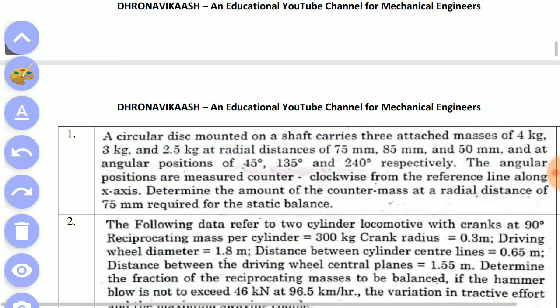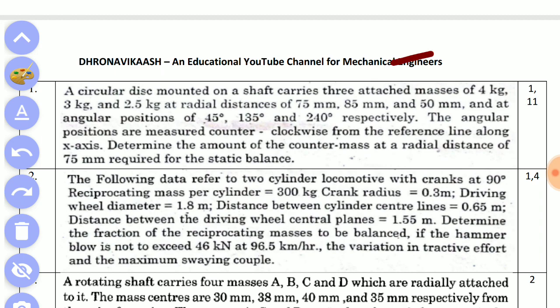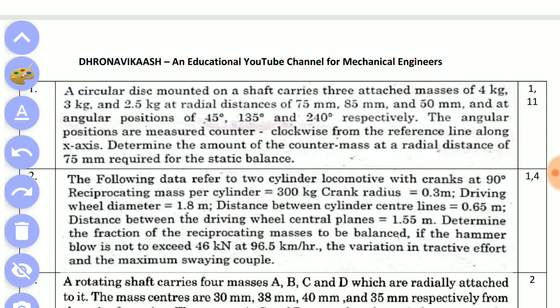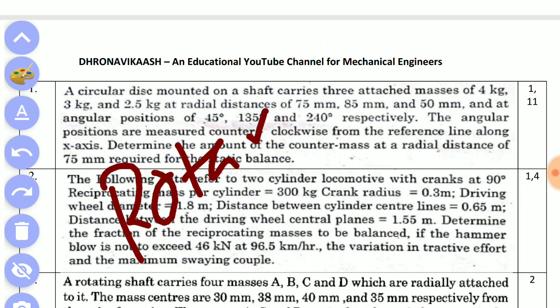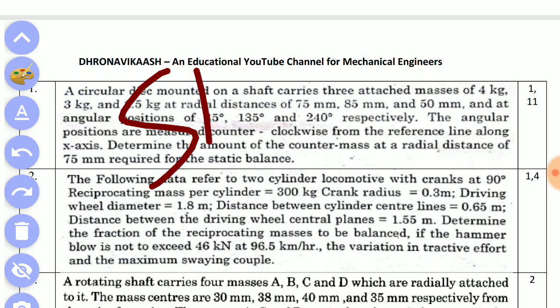If you look at the first semester, you will see a circular disc mounted on a shaft. If you look at the distance, you will see the amount of the distance. If you look at the rotation, you will see the rotation. If you look at the rotary and dynamic balancing, you can see the distance between the rotary and the dynamic balancing.